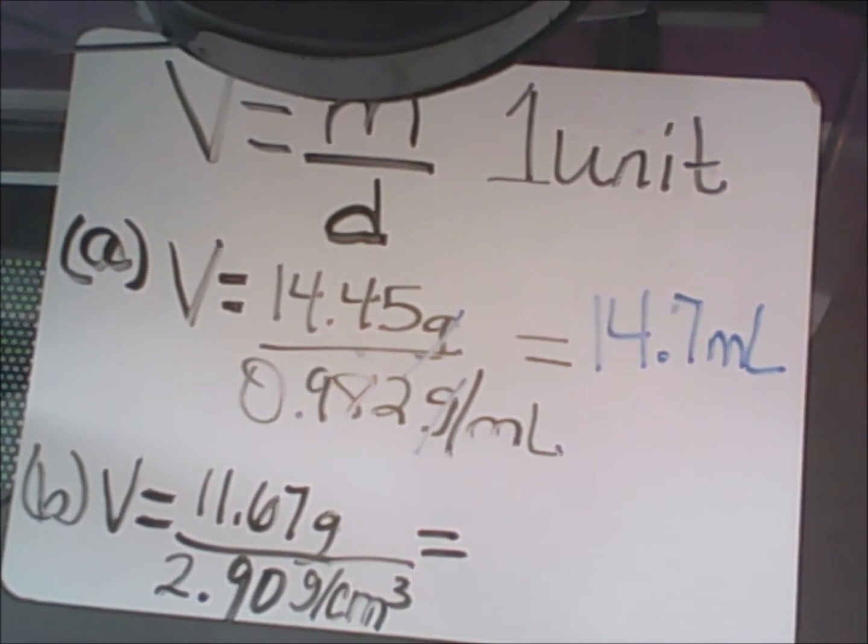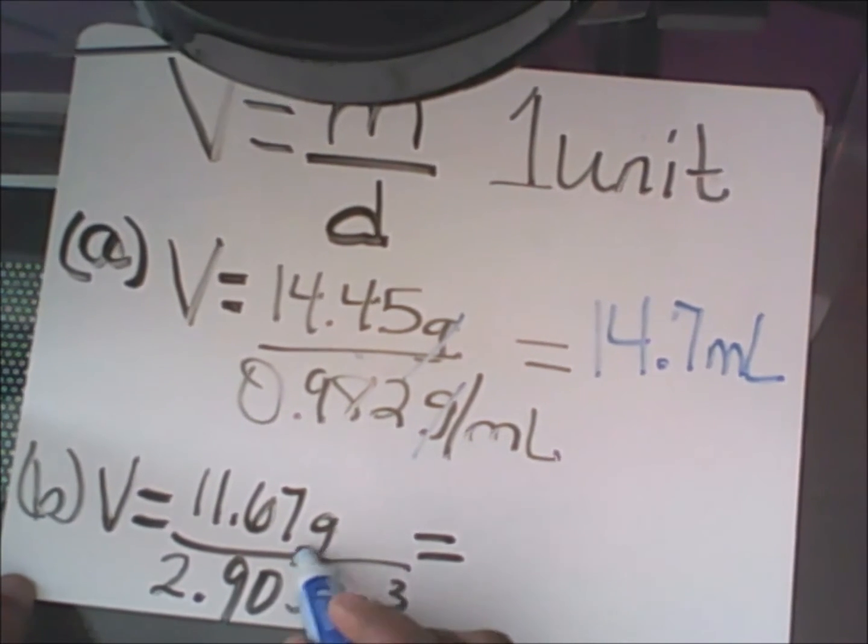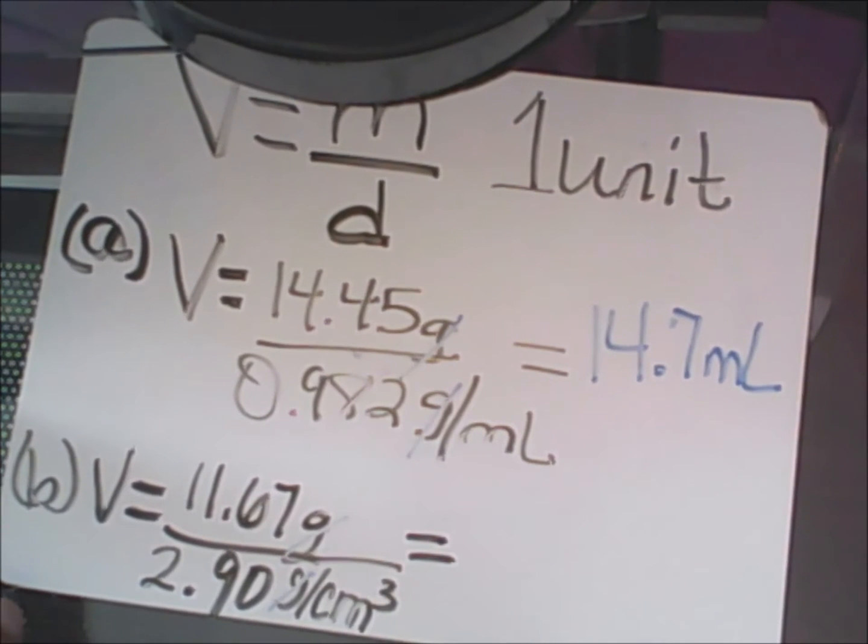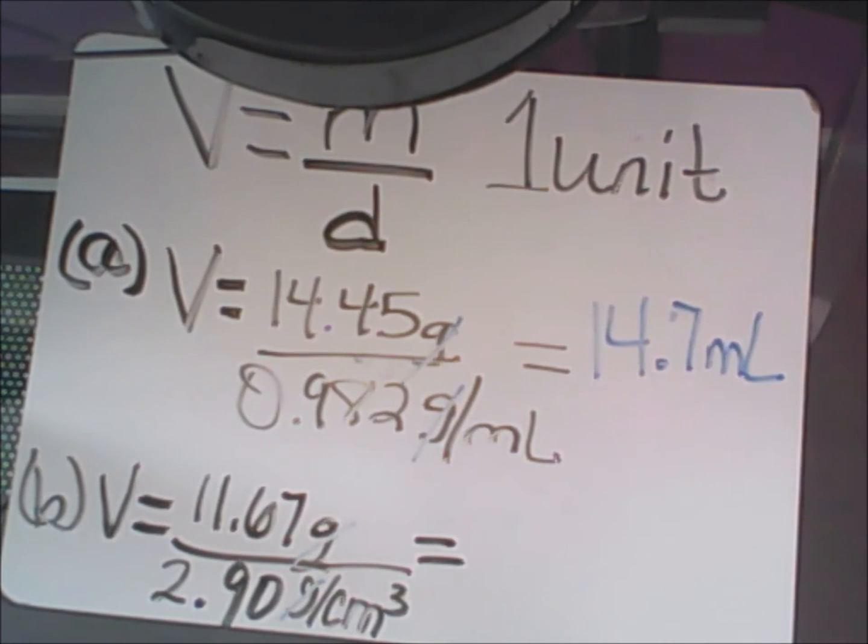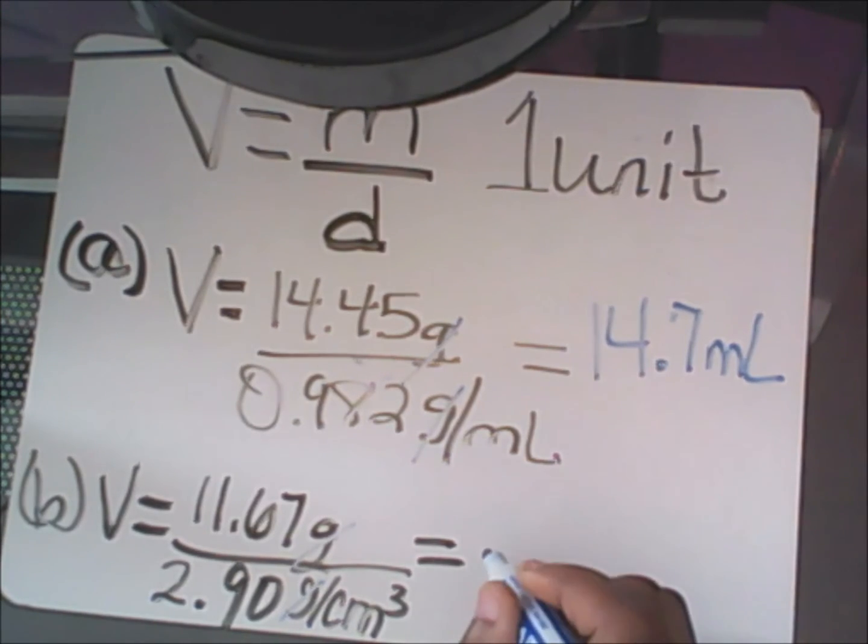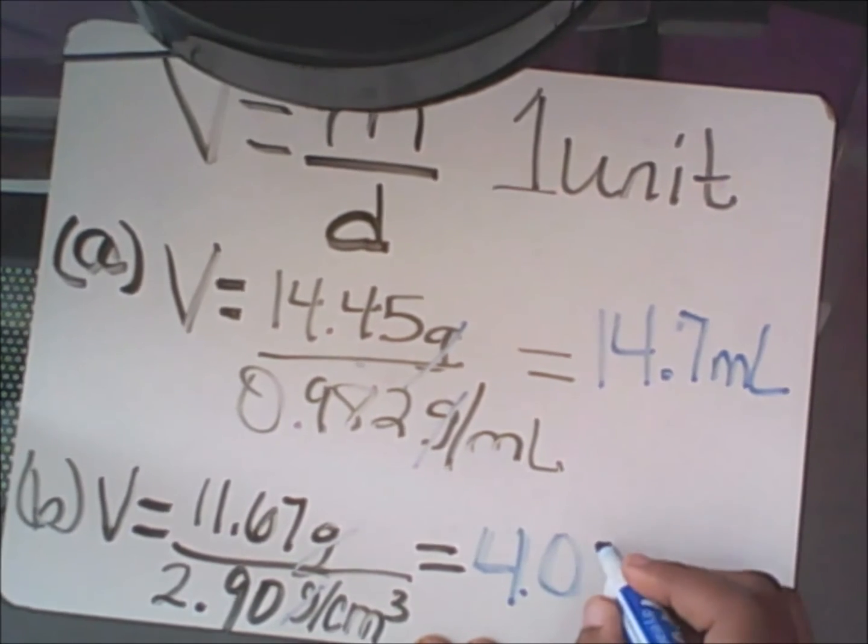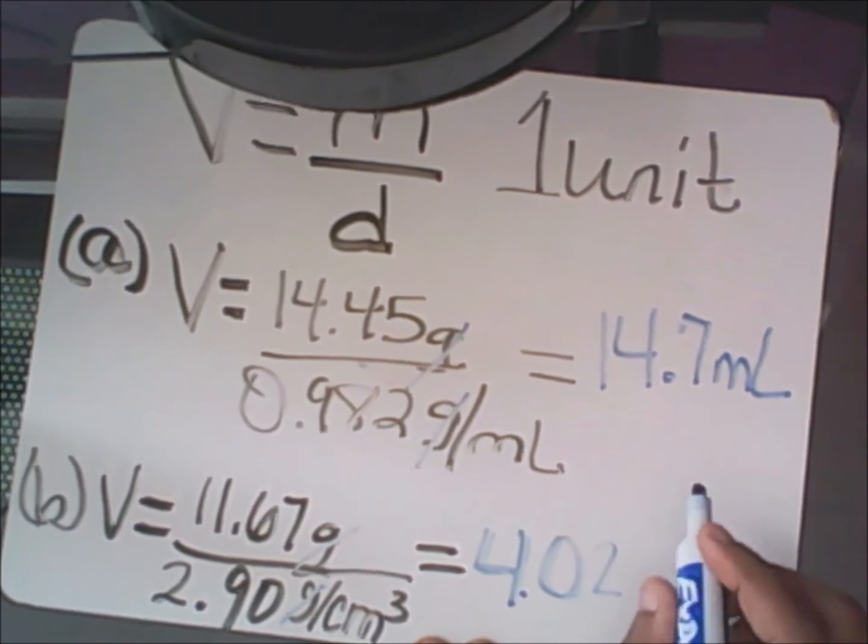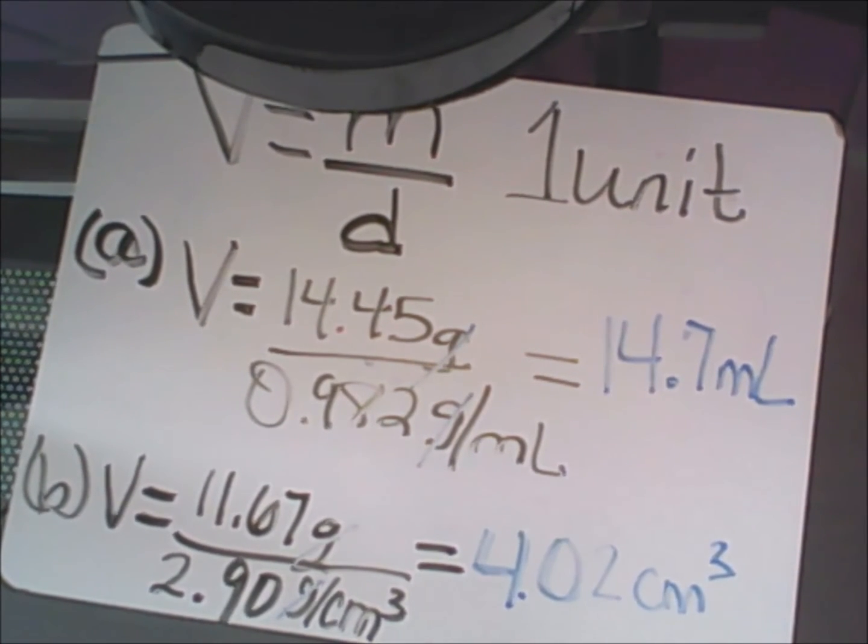The next example: volume equals 11.67 grams over 2.90 grams per cubic centimeters. Again, I'm going to cancel out my grams because they are the same on the top and the bottom, and we get rid of our like terms. When I take the four sig figs on top divided by the three significant digits on the bottom, my final answer should come out to having only three significant numbers, which in this case the final answer is 4.02 centimeters cubed or cubic centimeters.